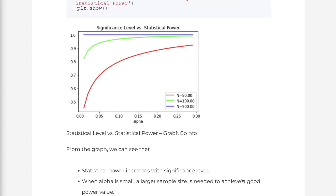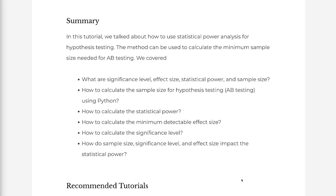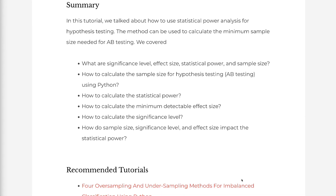In this tutorial, we talked about how to use statistical power analysis for hypothesis testing. The method can be used to calculate the minimum sample size needed for A/B testing. We covered: what are significance level, effect size, statistical power, and sample size; how to calculate the sample size for hypothesis testing using Python; how to calculate the statistical power; how to calculate the minimum detectable effect size; how to calculate the significance level; and how sample size, significance level, and effect size impact statistical power.